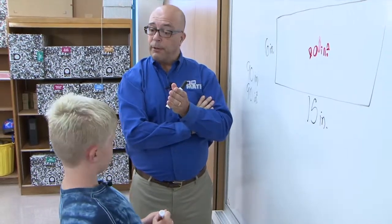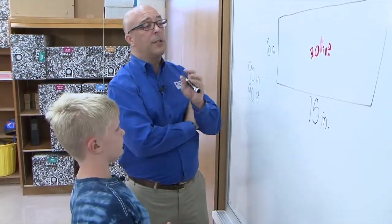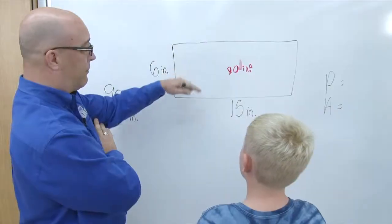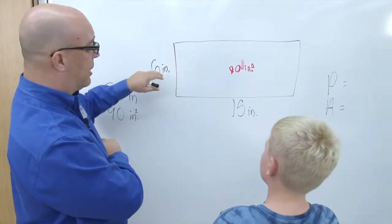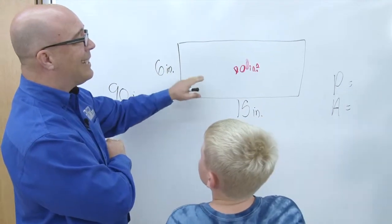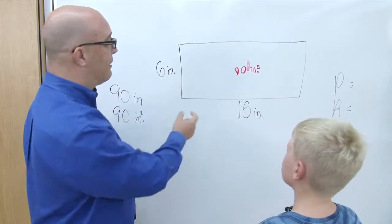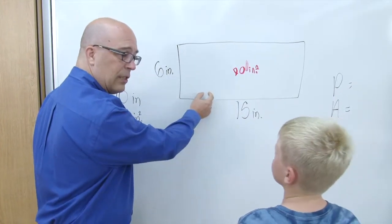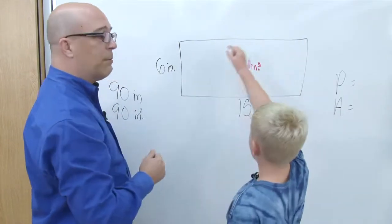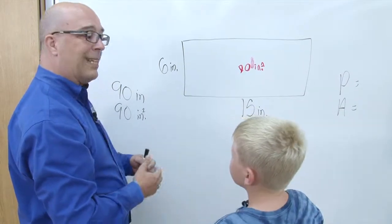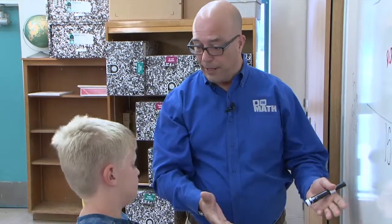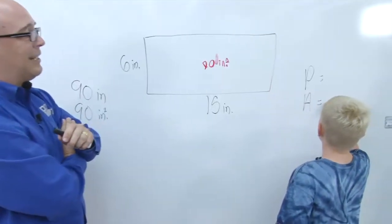Right, so when we're doing the area of this figure, when we do length times width, it's 90 inches squared because if we had little inch cubes, there would be 90 of them. So area is squared. Yeah, okay. So next to area, why don't you go ahead and write down the final answer: 90 inches squared.